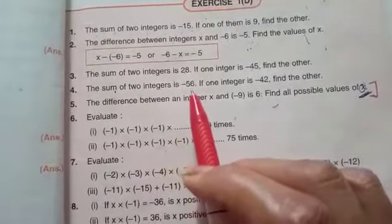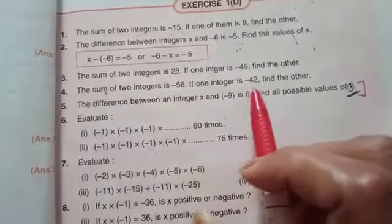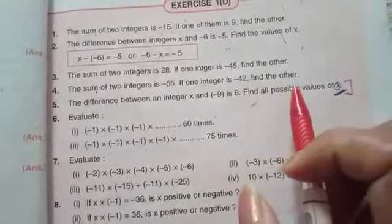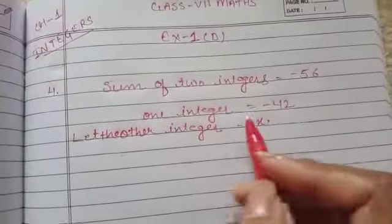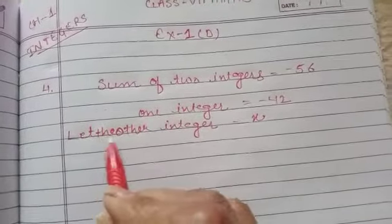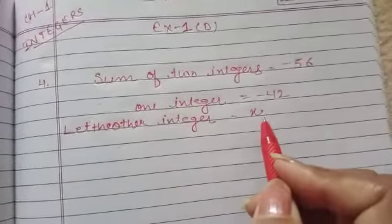The sum of two integers is -56. If one integer is -42, find the other one. Similar to the previous question, sum of two integers is -56, one integer is -42. Let the other integer be x.